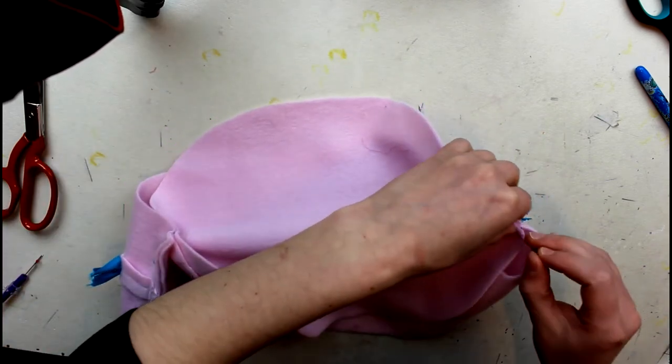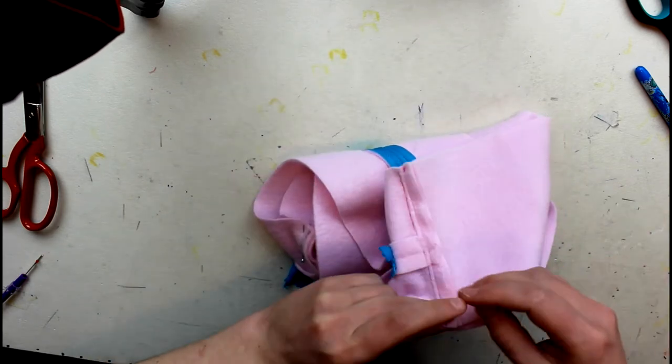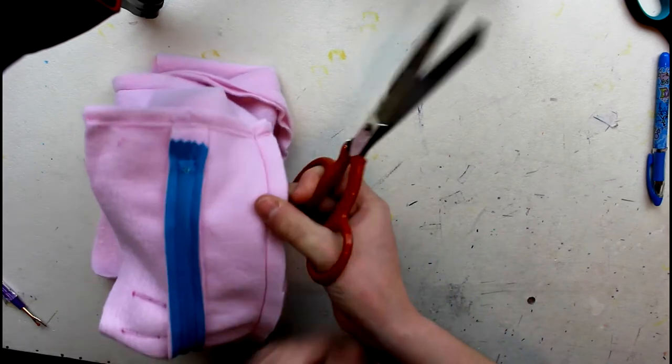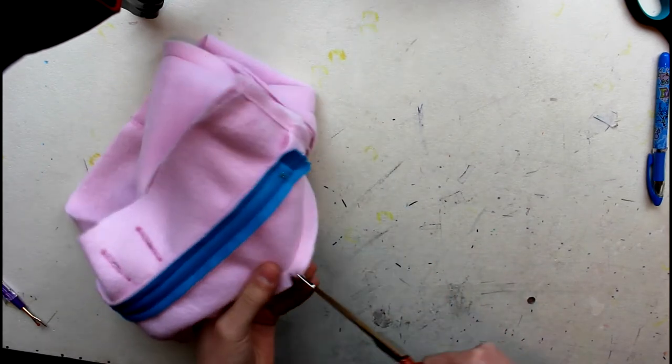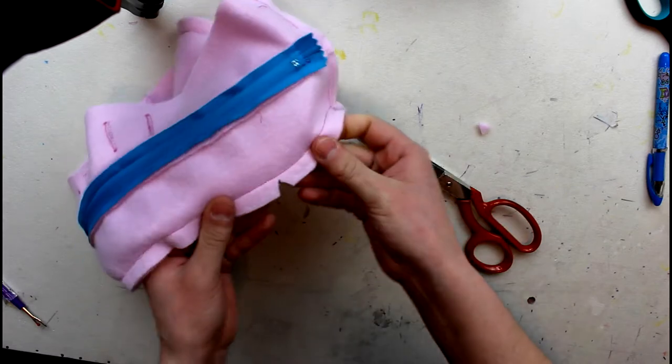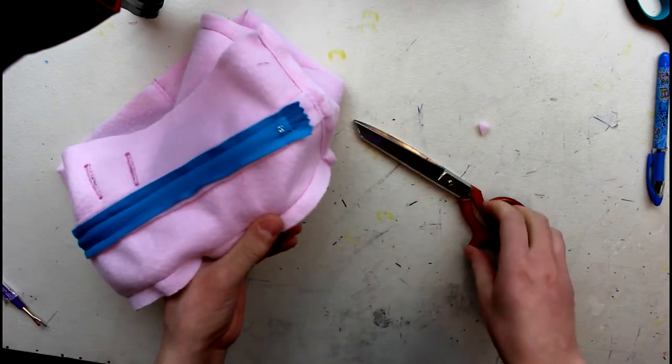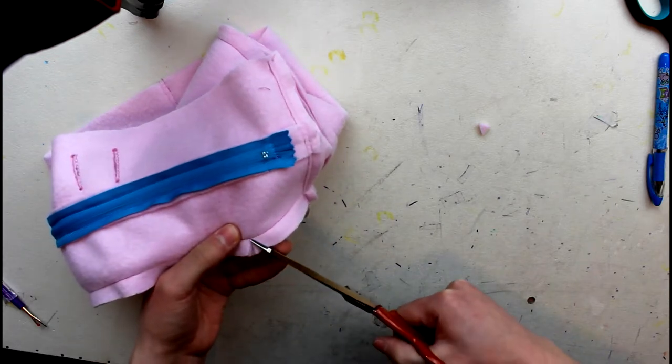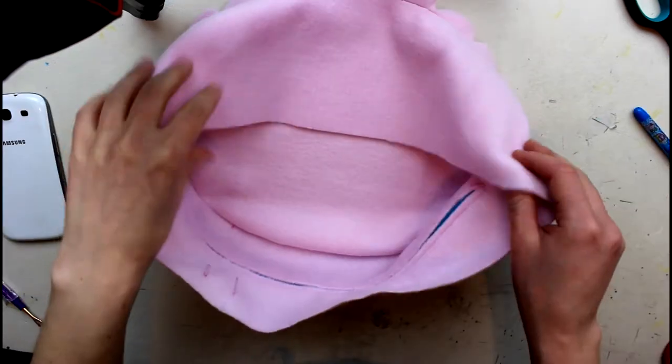Next you're going to cut some triangular shapes within your seam allowance at an interval of an inch or so. That is going to relieve bulk since it's a round object. It's going to sit a lot better once everything is turned inside.